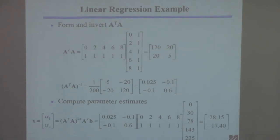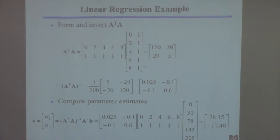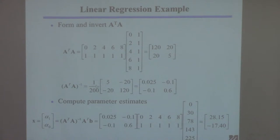Next you need the inverse of that matrix. For a two-by-two matrix, you multiply the two diagonal elements together — that's 600 — then subtract the product of the off-diagonal elements, which is 400, giving a determinant of 200. Then you take one over 200, swap the diagonal elements, and negate the off-diagonal elements to get the inverse. Divide all four elements by 200 and you have it.